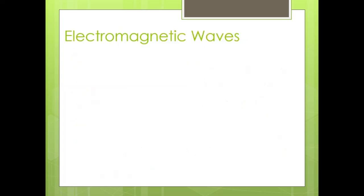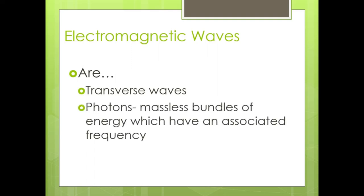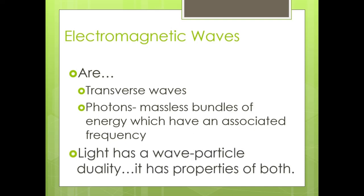To finish up: electromagnetic waves are transverse waves. They are also photons — massless bundles of energy with an associated frequency. Light has what we call wave-particle duality: it has properties of both waves and particles. That's all for this video; we'll pick up with more on light in the next one.